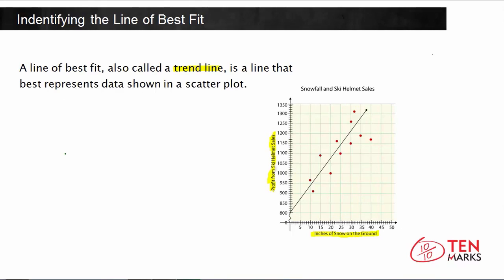You would make some general assumptions that as more snow falls, more and more people are going to want to ski, and therefore buy more helmets. The best way to make predictions about the amount of snow and the profit in ski helmet sales would be to make a trend line based off of this data.